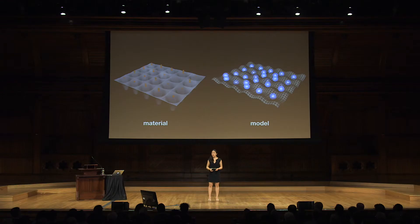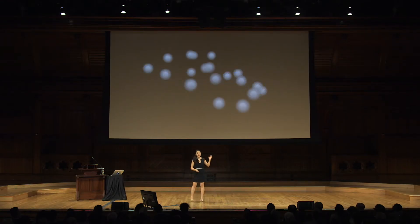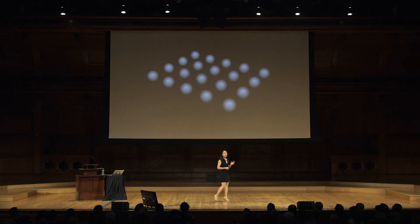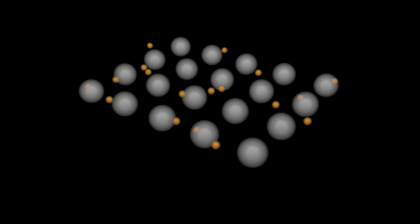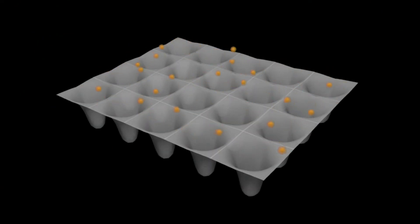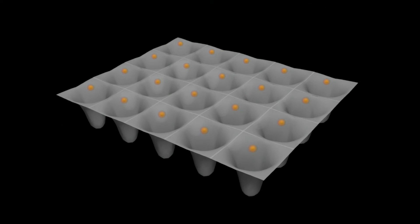To understand our model, we must first understand the basic structure of materials and what makes strongly correlated materials unique. Every material is made up of atoms. If these atoms are arranged in a crystalline grid, the most loosely bound electrons can break free from their parent atoms and move around the material. To these electrons, the atoms provide a landscape of hills and valleys — the electrons tend to stay in the valleys near their parent atoms but can still move around and repel other electrons.